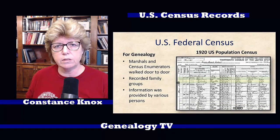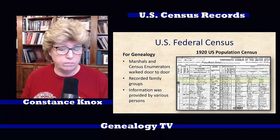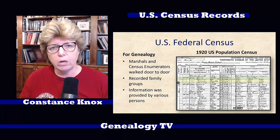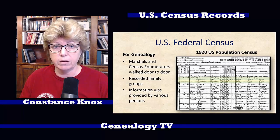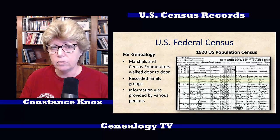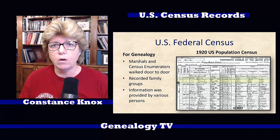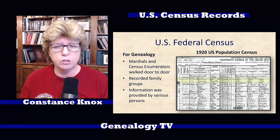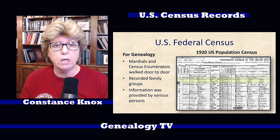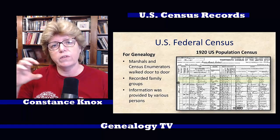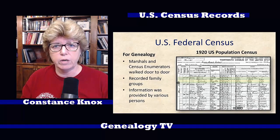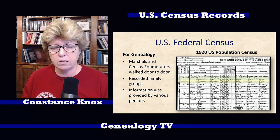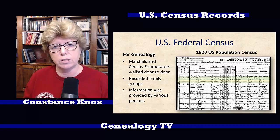If you're new to genealogy and you've never used the U.S. federal census before, you're going to find this to be probably one of the most valuable resources in your toolkit. U.S. Marshals, and later census enumerators, would walk door to door and document each family group. In the early census records, they only documented the name of the head of the household, and then later they added all names.